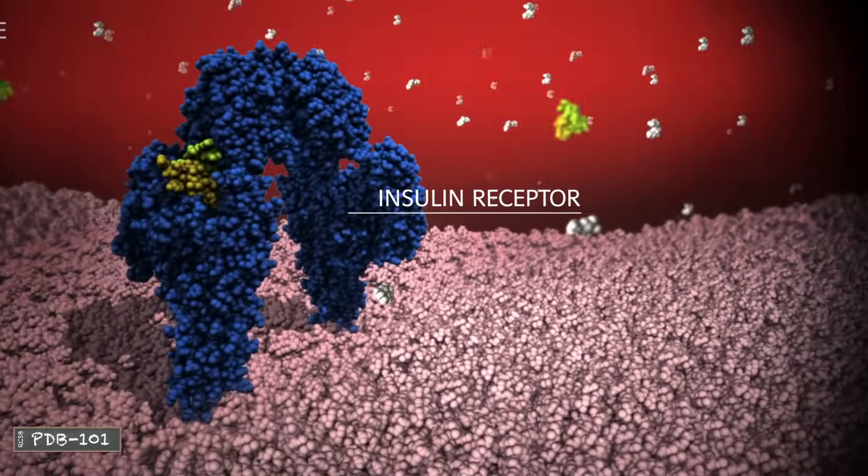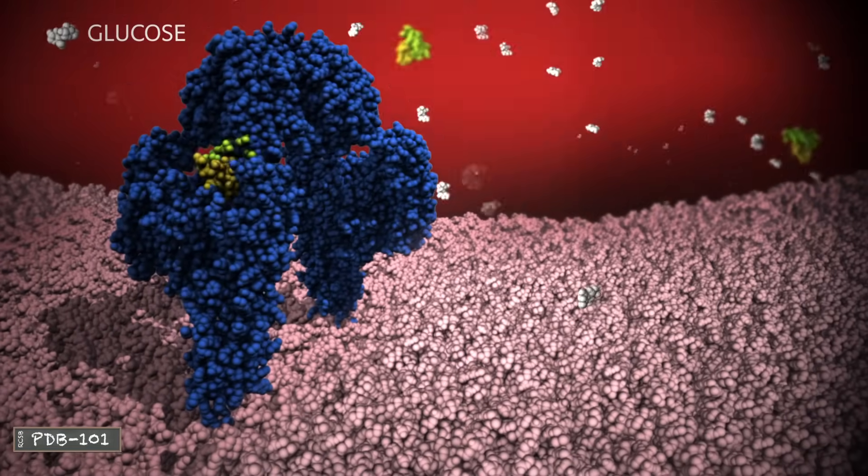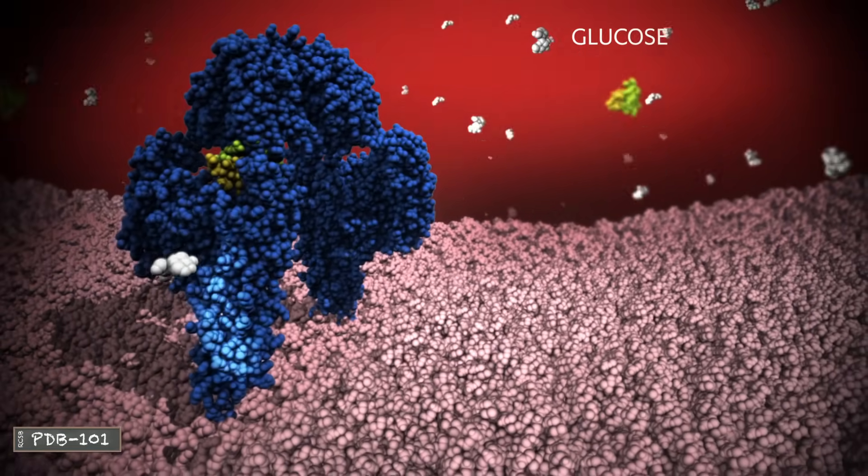The hormone insulin is a small stable protein that can easily maintain its shape while traveling through the blood to regulate blood glucose level.